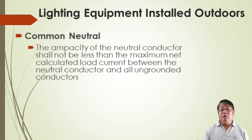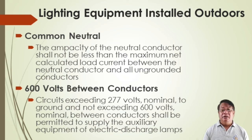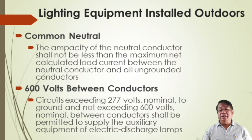For lighting equipment installed outdoors, the ampacity of the neutral conductor shall not be less than the maximum net calculated load current. For circuits exceeding 227 volts nominal to ground but not exceeding 600 volts nominal between conductors, it shall be permitted to supply the auxiliary equipment of electric discharge lamps.